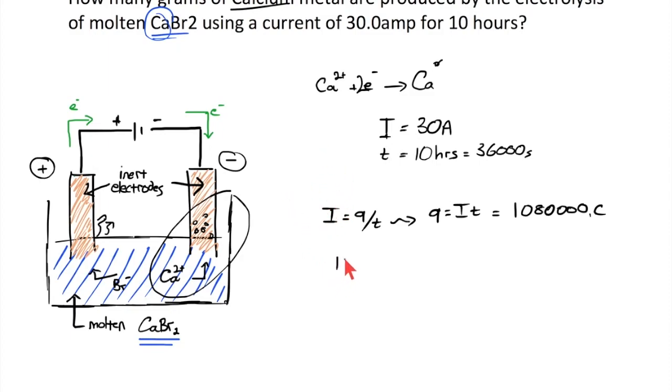If I take 1,080,000 coulombs and divide by the Faraday constant, which is 96,485 coulombs per electron, that gives me a grand total of 11.193 moles of electrons that were transferred.